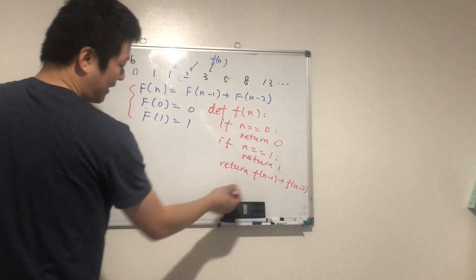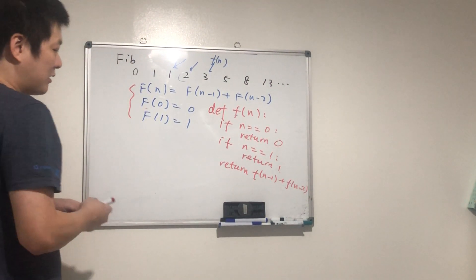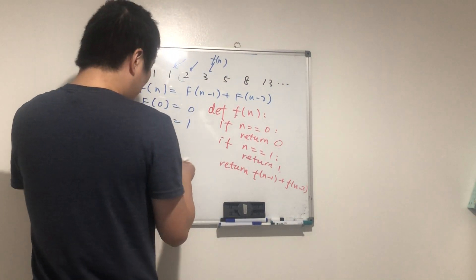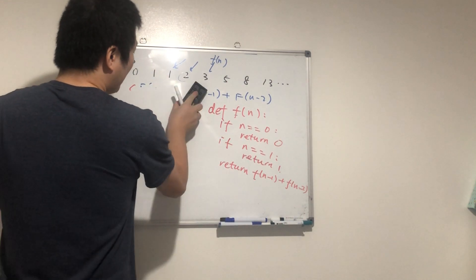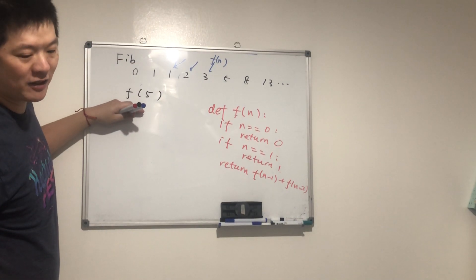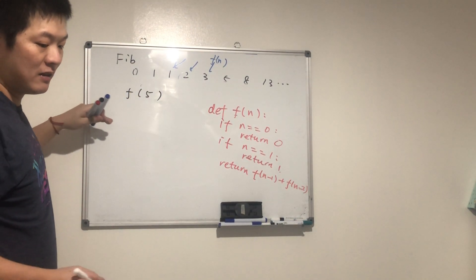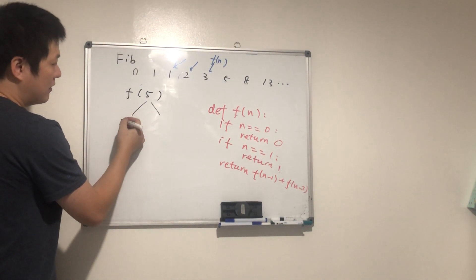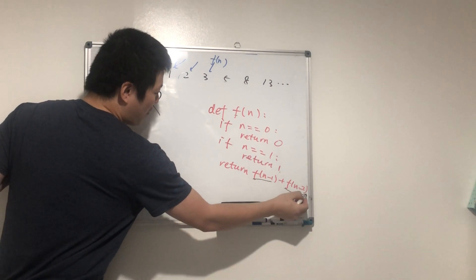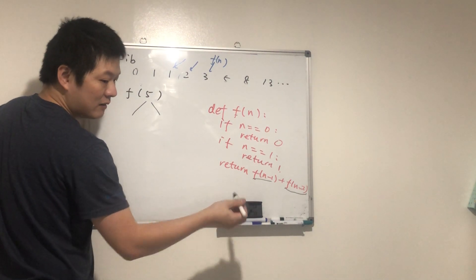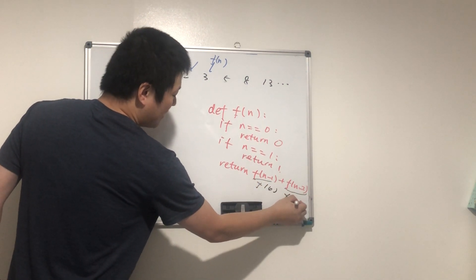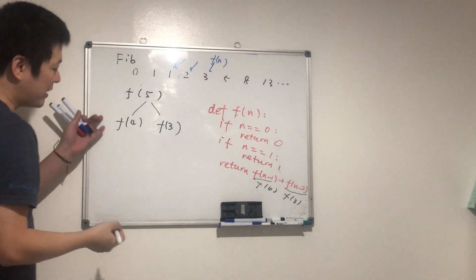This is pretty similar to what we defined in math. Let's trace it for n equals five. To calculate f(5), what do we need to know first? We need f(4) and f(3). And to calculate f(4), what do we need to know before that?